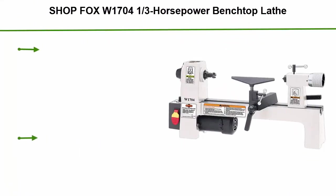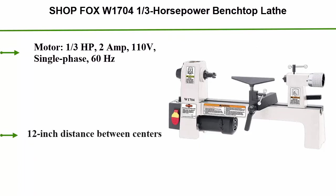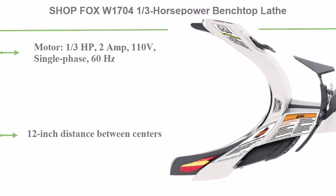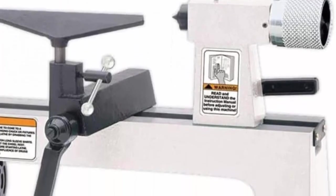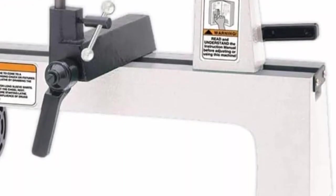Top 3: Shop Fox W1704, one-third horsepower benchtop lathe. Motor: one-third HP, 2 amp, 110V single phase, 60Hz. 12 inch distance between centers, 8 inch swing over bed. Cast iron construction and infinitely variable speed control. Includes two tool rests.